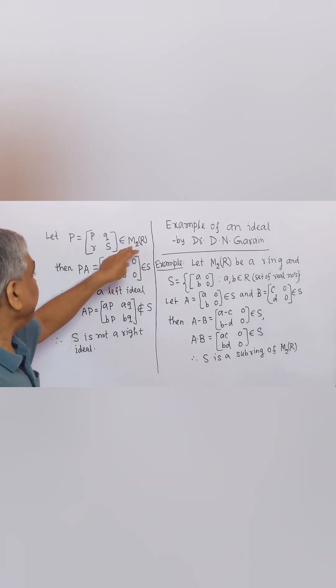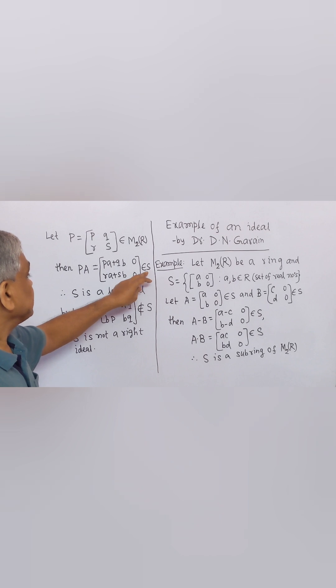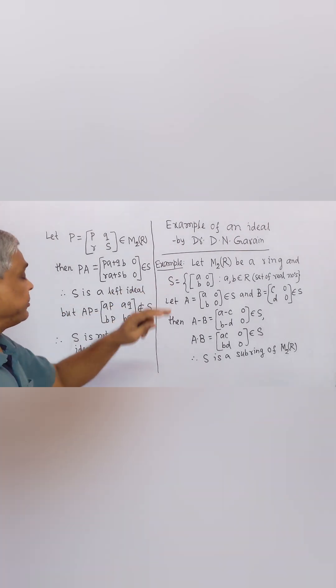Let P belongs to M2R. Here, PA belongs to S because second column contains 0 entries. Therefore, S is a left ideal.